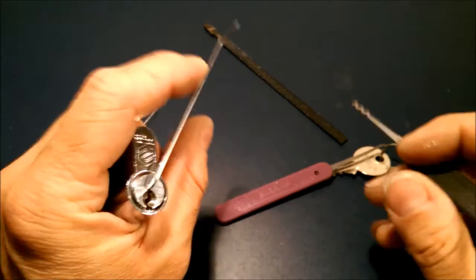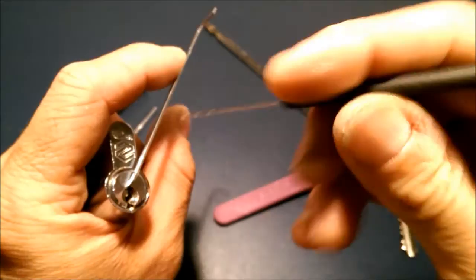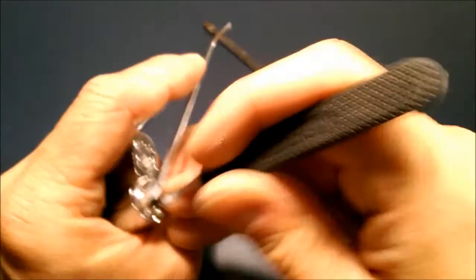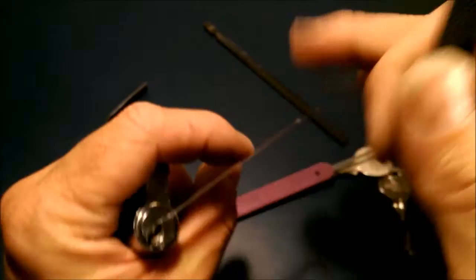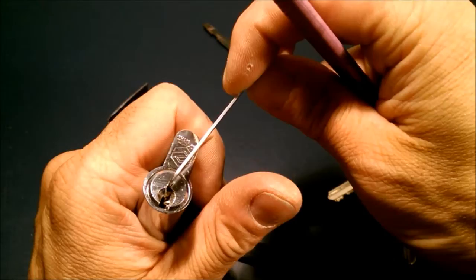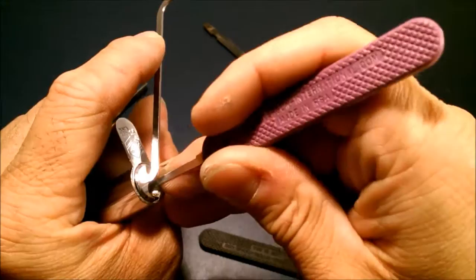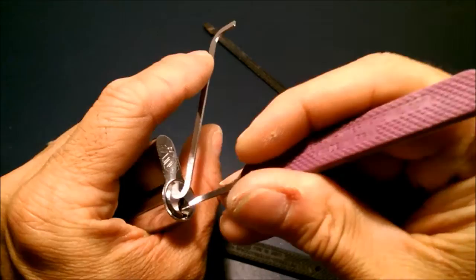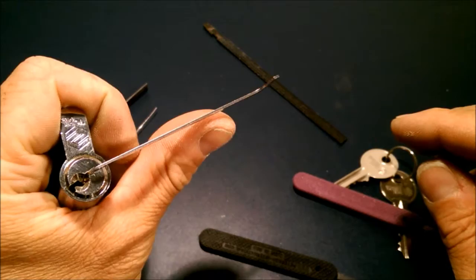I will demonstrate it by using a rake, apply light tension and open. That's just one possibility, you can SPP this lock and you can also zip it, which I will show you now. Just take your hook and touch all pins when pulling out the hook, so it's open again.